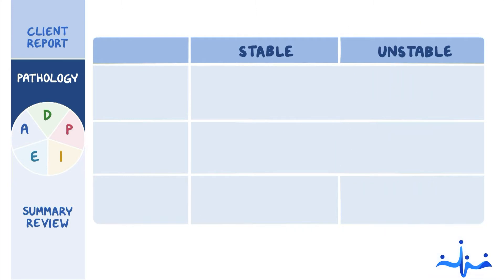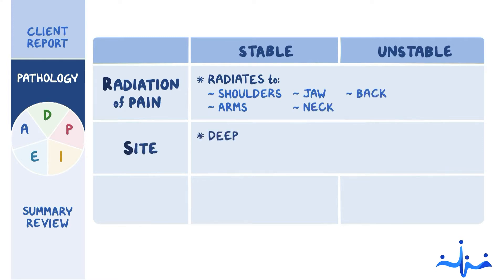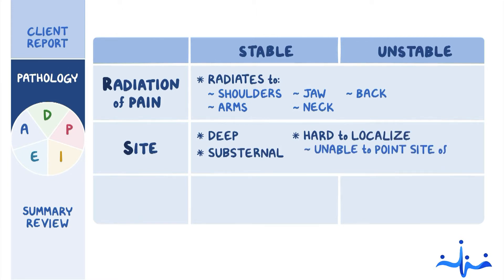R stands for radiation of pain, because it often radiates to the shoulders, arms, jaw, neck, or back. S is for site, which is deep substernal and sometimes hard to localize, meaning the client is unable to point to the site of the pain with a single finger.